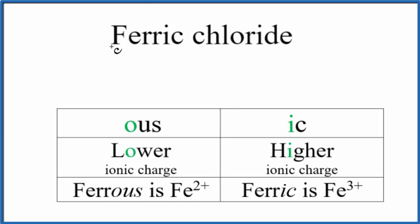So this is an older naming system, sometimes called the common naming system. In that system, when we see IC, we know that IC means we're going to have the higher ionic charge.